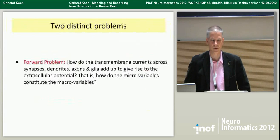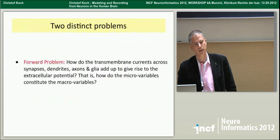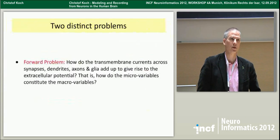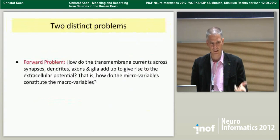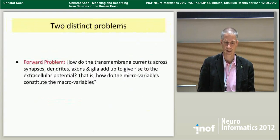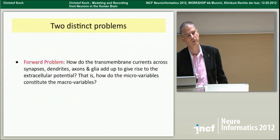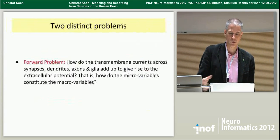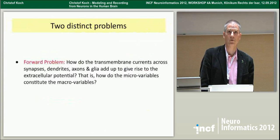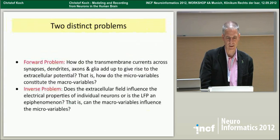There are two distinct problems: the forward problem and the inverse problem. The forward problem is how the various transmembrane currents across all sorts of cellular membranes — neuronal membranes including axonal, dendritic, and synaptic membranes, as well as glia and astrocytes — contribute to the extracellular potential. How do the microvariables, roughly 100,000 neurons per cubic millimeter, contribute to the macrovariables you can measure outside with an electrode, and ultimately outside the skull with large surface electrodes?